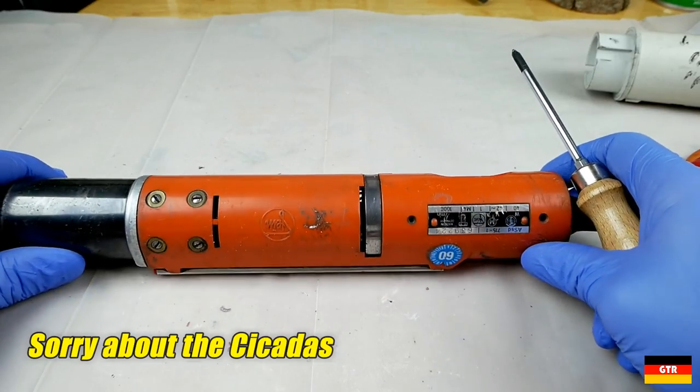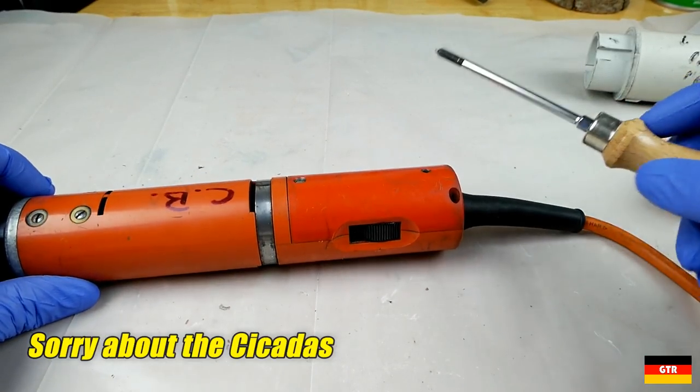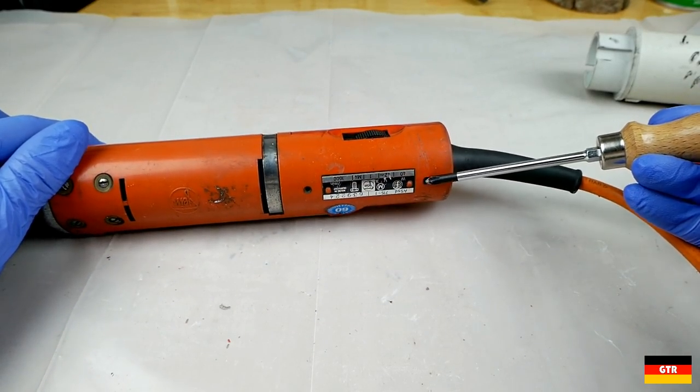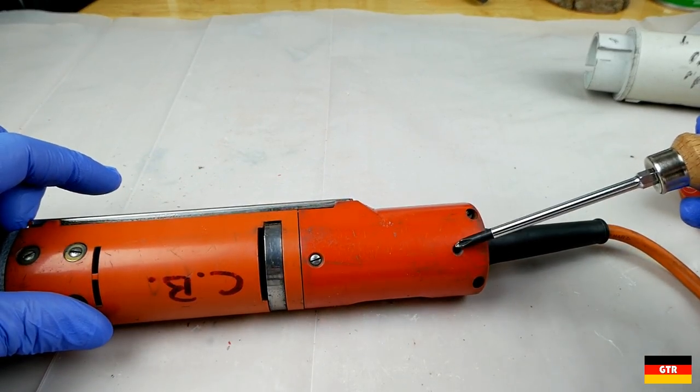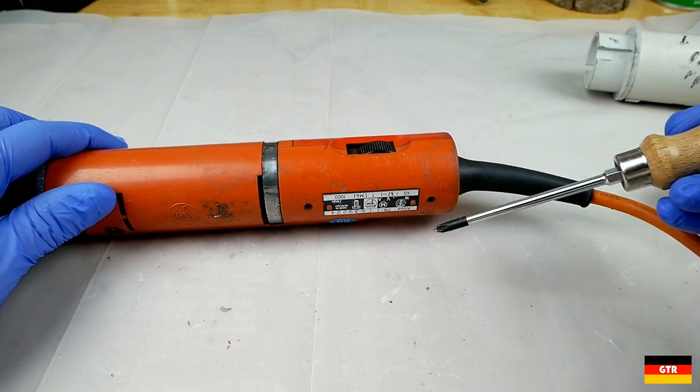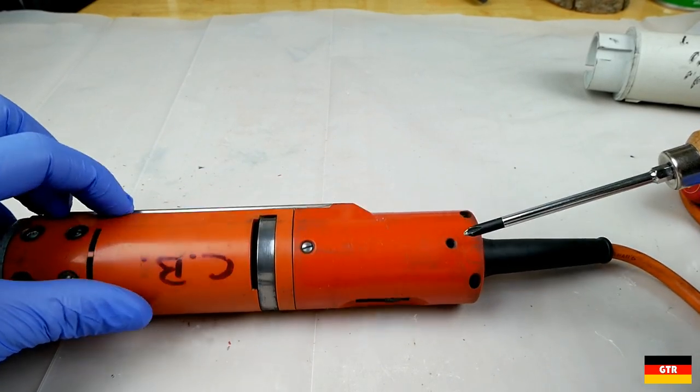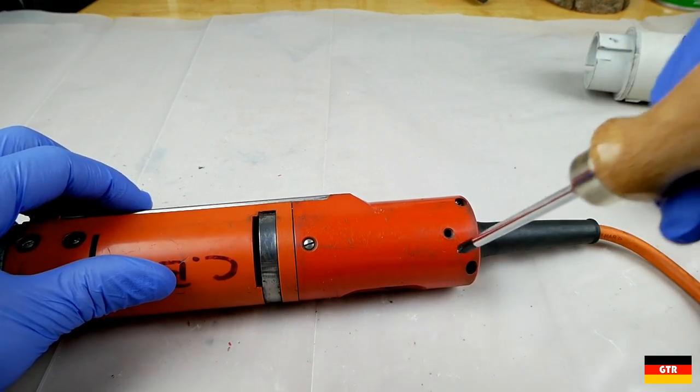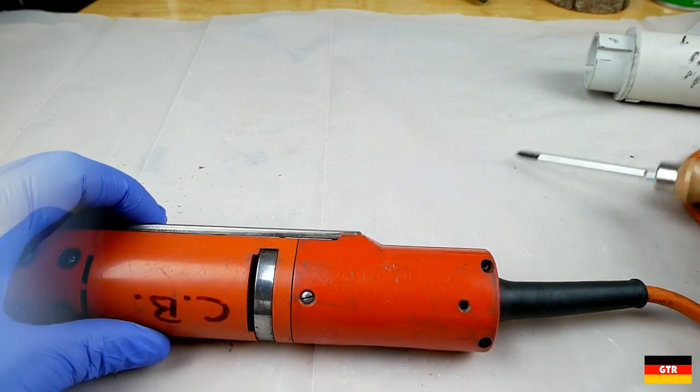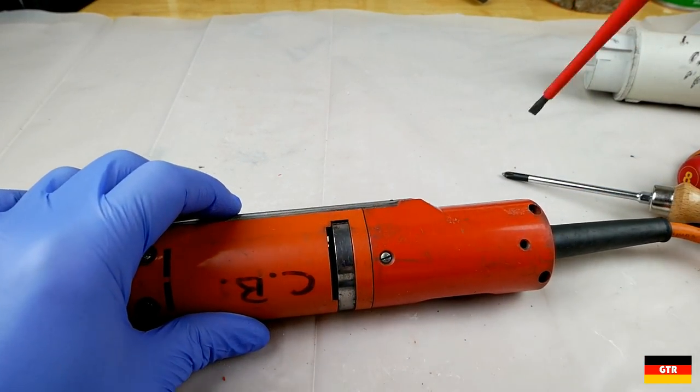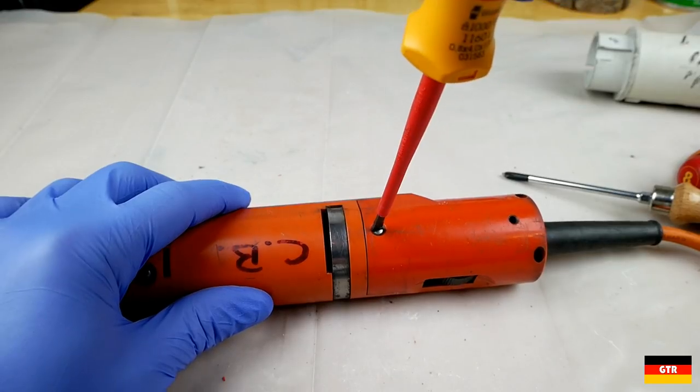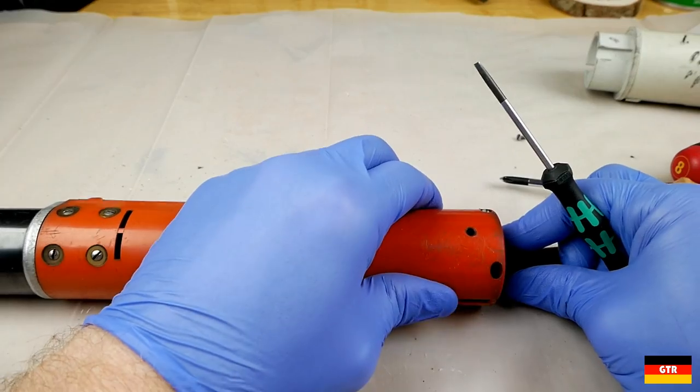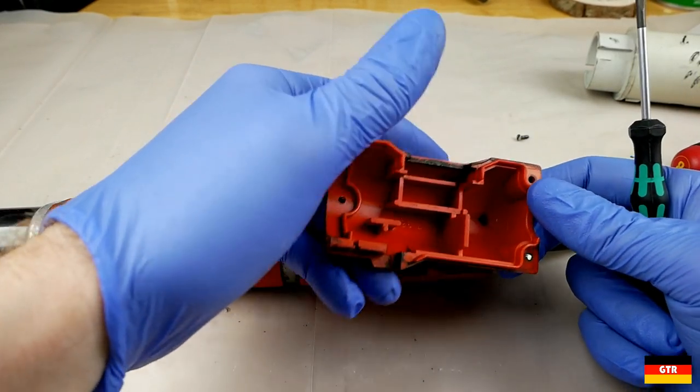Okay, so we're on to the main tool here. So the only thing I see that's missing from the outside is there's supposed to be a hook here for hanging it from a balancer. So I'll have to find a way to replace that if it's worth it. Looks like we're missing a screw right here too. So let's go ahead and pop this cover off so we can take the cord off.